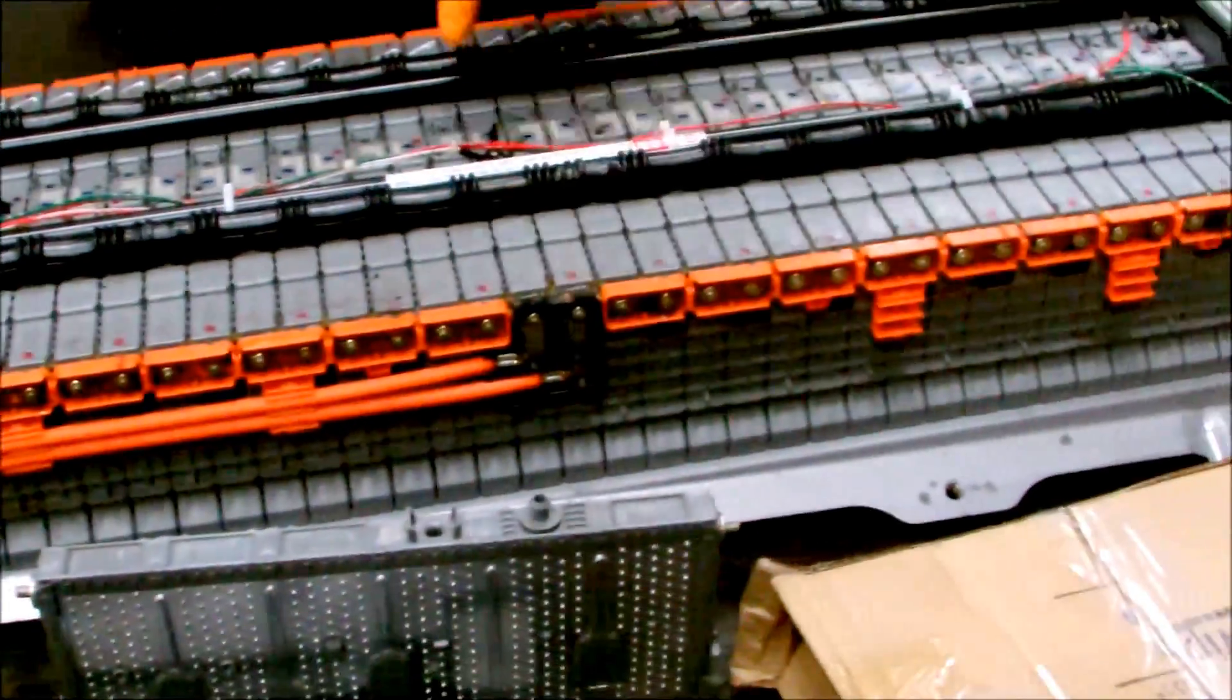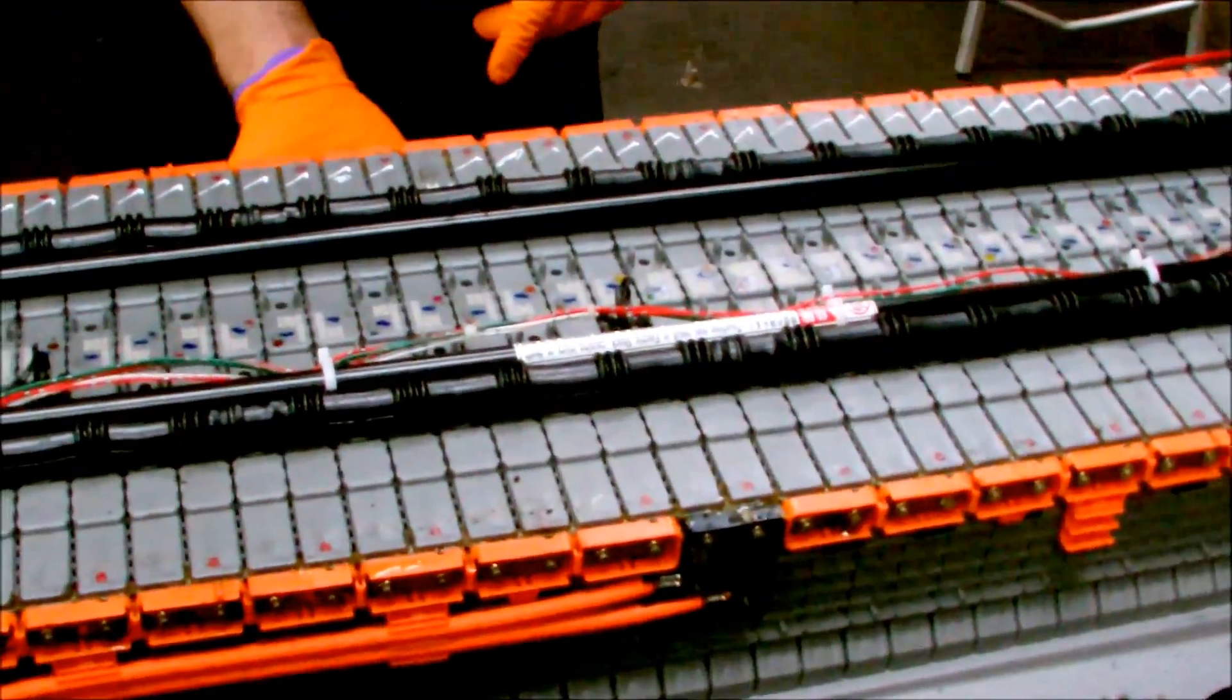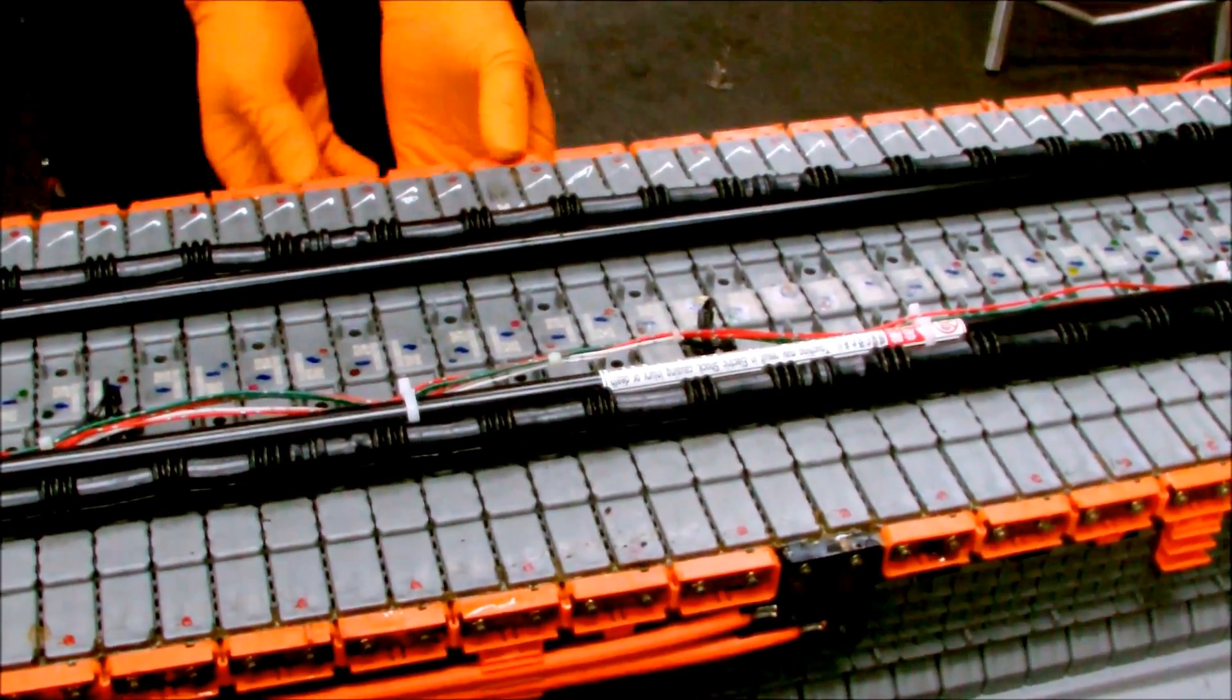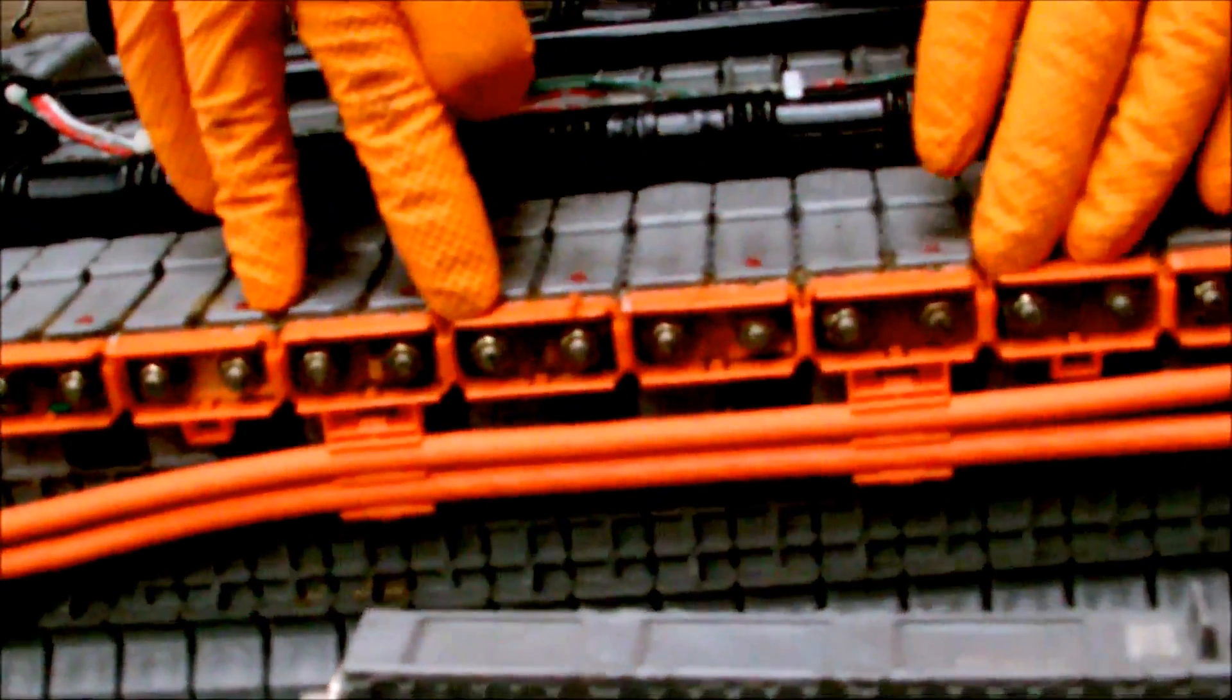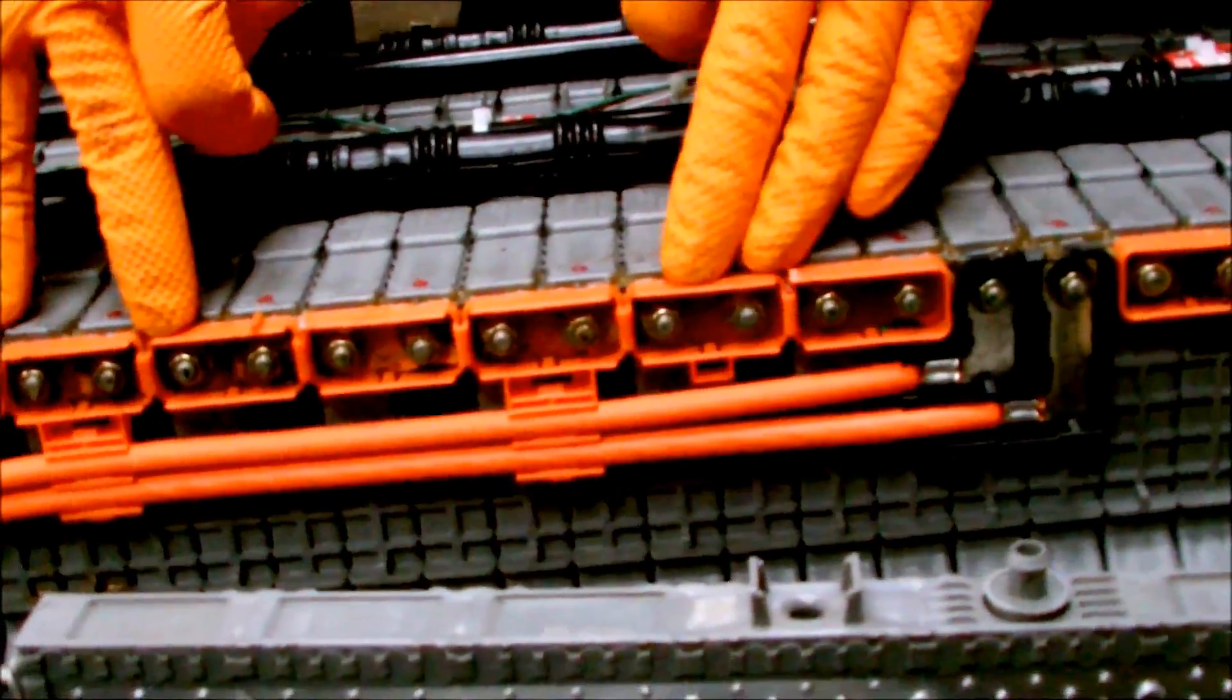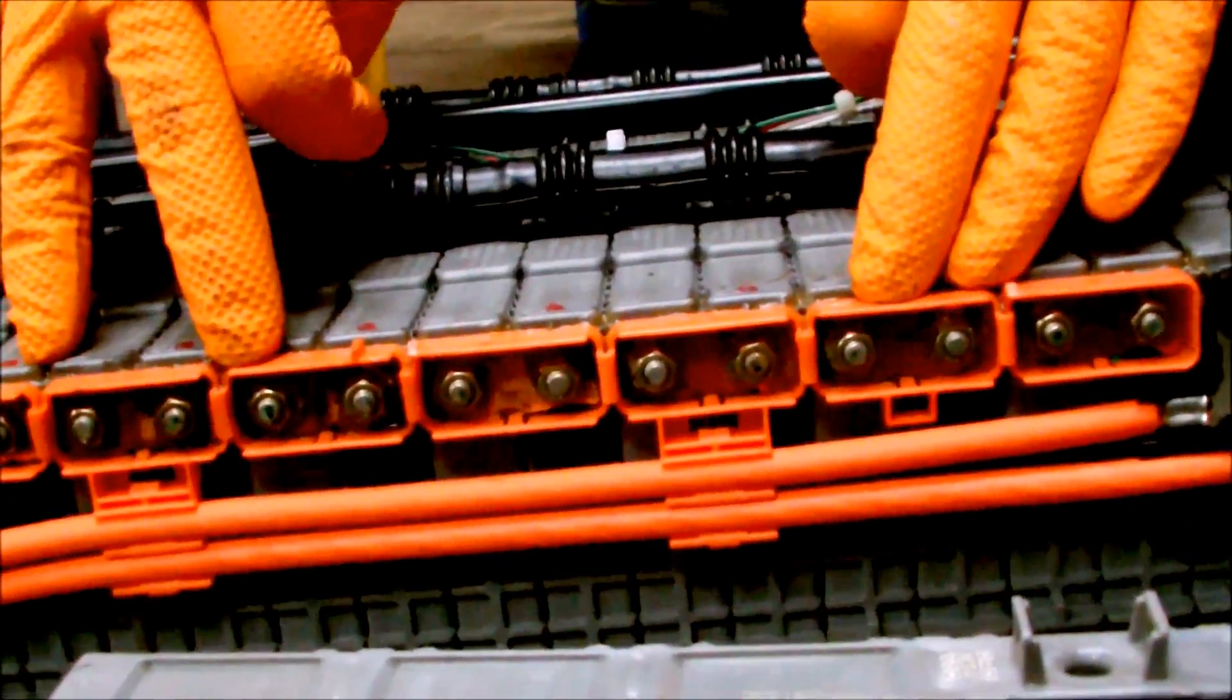To remove this module, we'll undo the bolts on the bottom and simply slide it out. The electrical connectors on the back are slightly aged and will be cleaned up with vinegar and Coca-Cola on a toothbrush. We'll grease them before refitting.